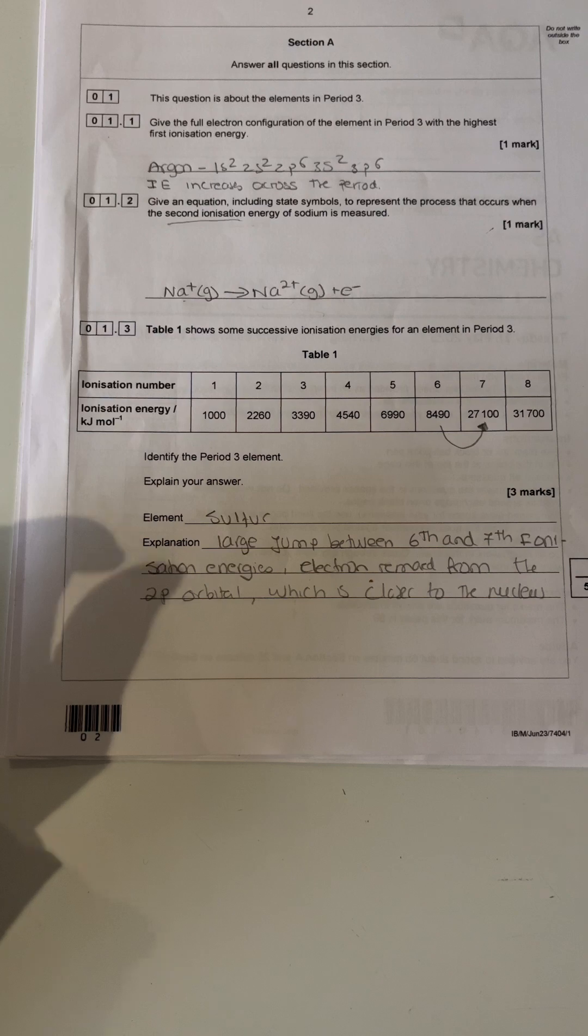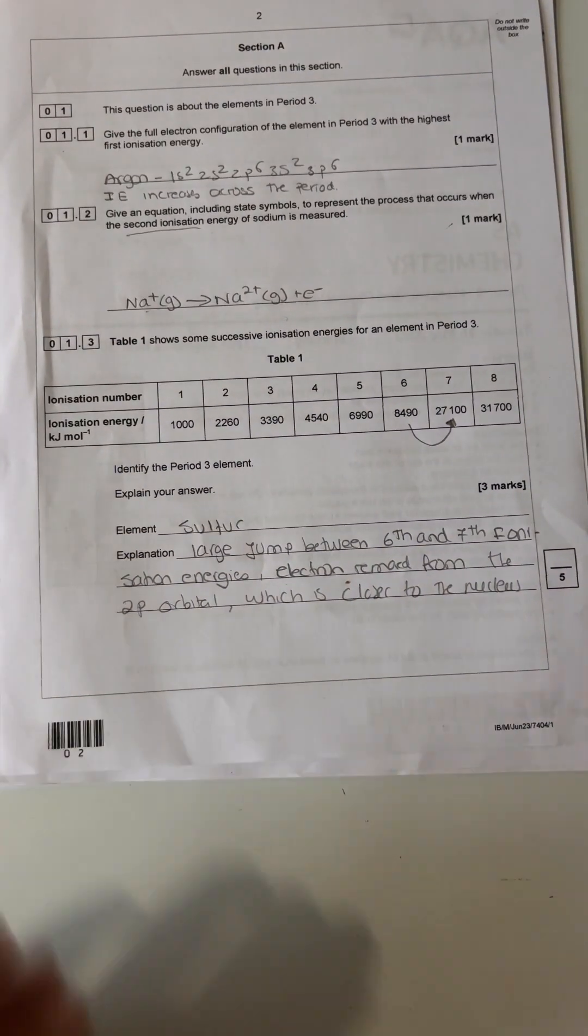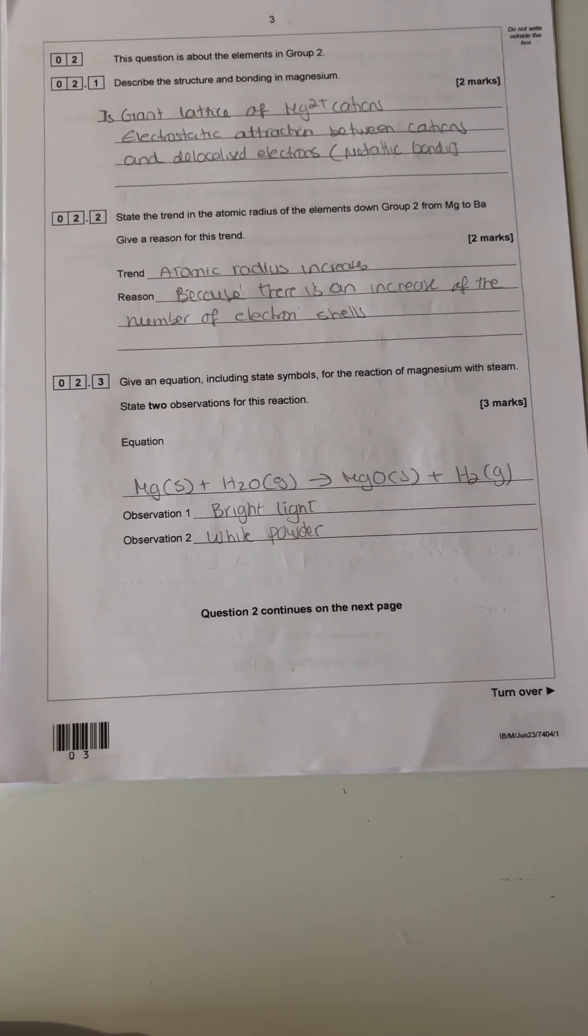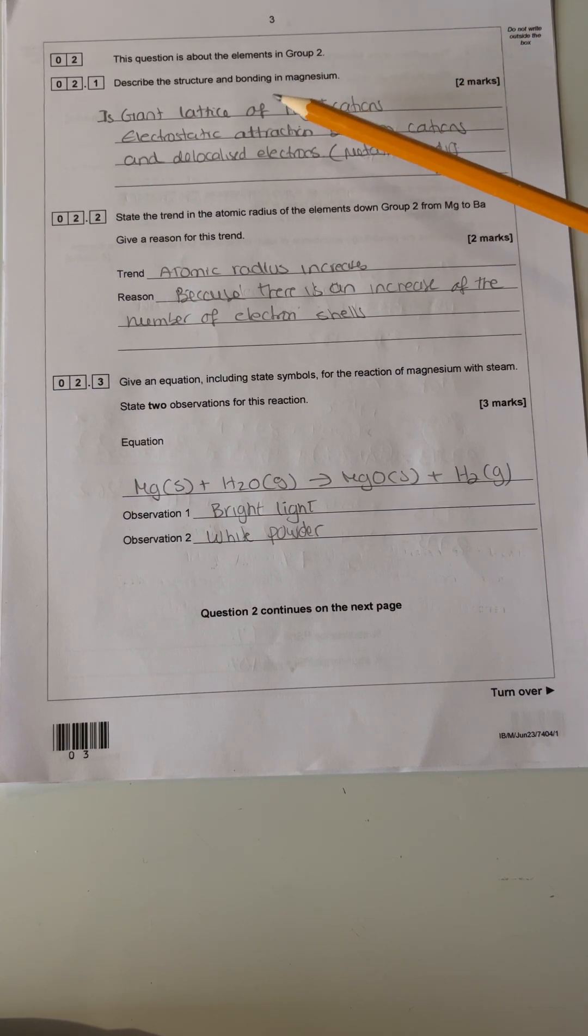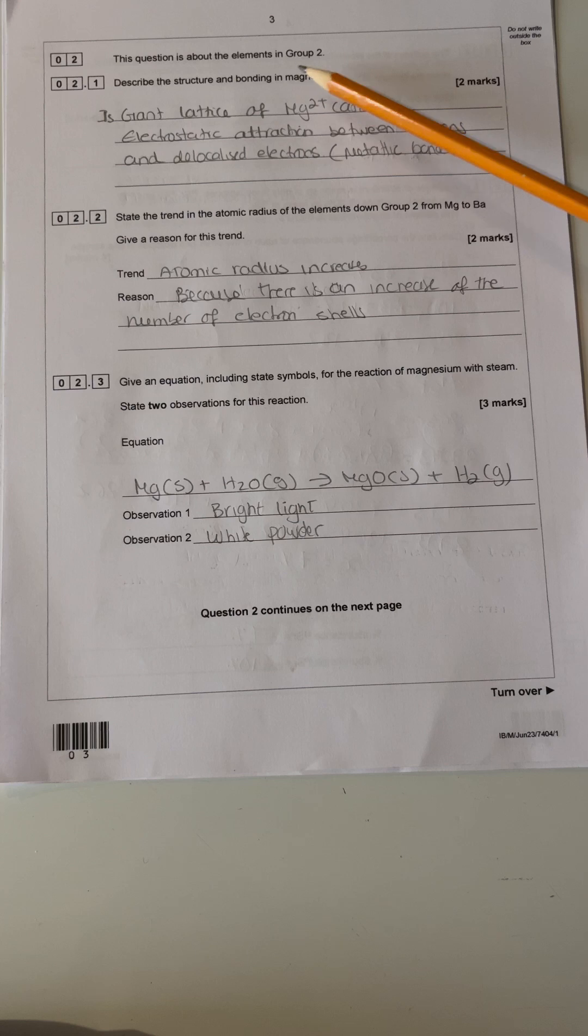Let's start question number two. This question is about elements in group two. Describe the structure and bonding of magnesium. The structure of magnesium—because it's metallic bonding—it's a giant metallic bonding. So it's a giant lattice of Mg2+ cations. Because magnesium is two plus, make sure you put two plus ions or cations. Then you put the definition: electrostatic attraction between cations and the delocalized electrons, which is metallic bonding.